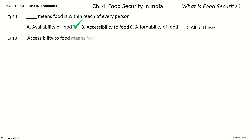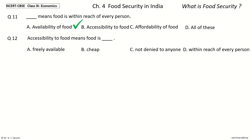Question 12: Accessibility to food means food is dash. The options are: freely available, cheap, not denied to anyone, within reach of every person. Your time to choose. And the answer is within reach of every person. So accessibility to food means food is within reach of every person.